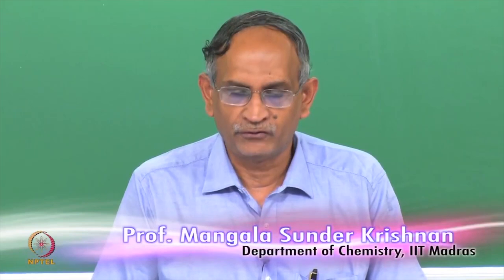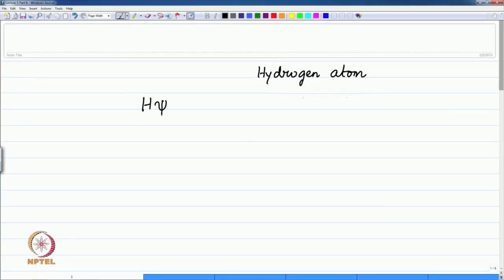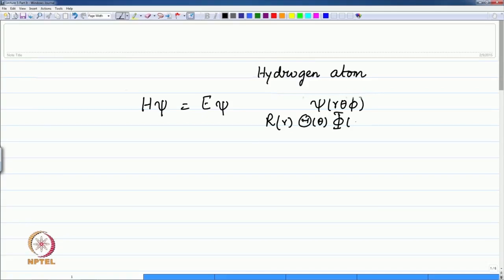Welcome back to the lecture. We will continue with the analysis of the solutions that we have proposed for the hydrogen atom. The equation being the Schrödinger equation H psi equals E psi, where psi depends on r, theta, and phi. We had proposed this to be a radial part and an angular part containing theta and phi, these two together written as spherical harmonics of two dependents.